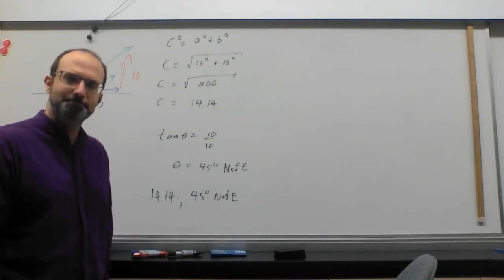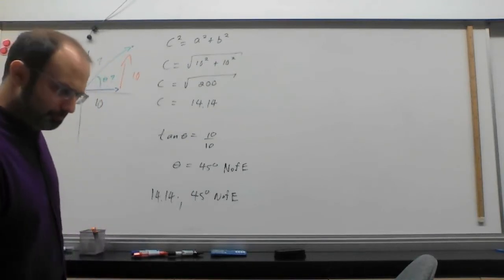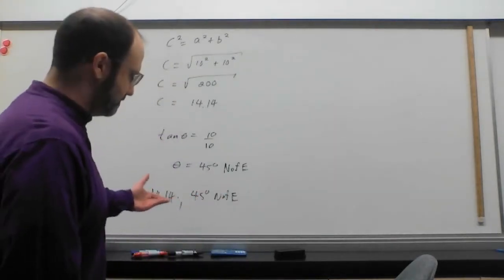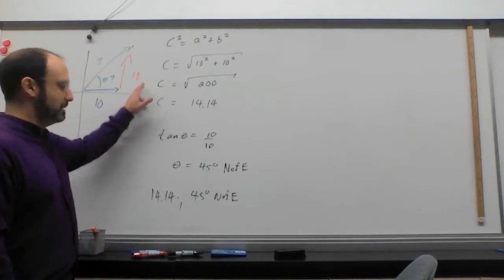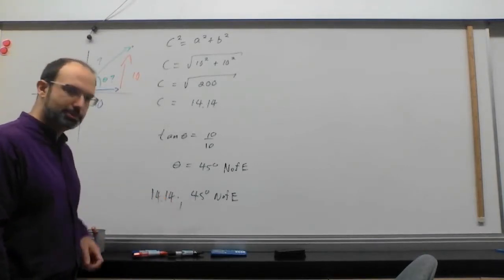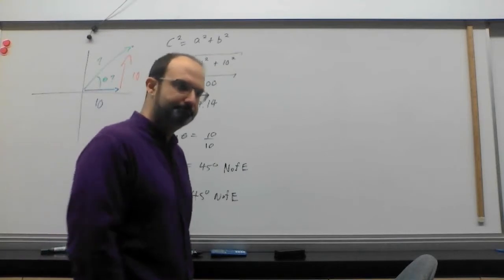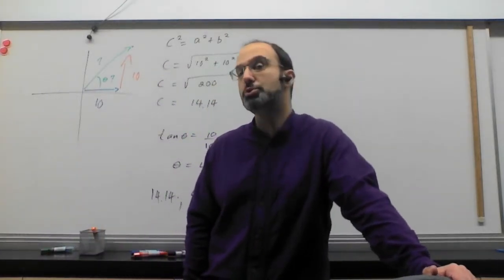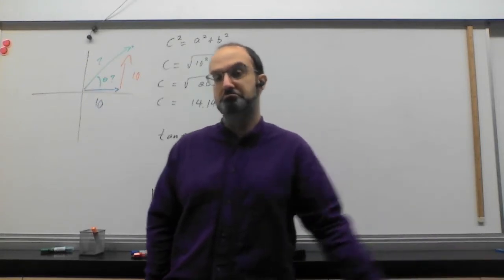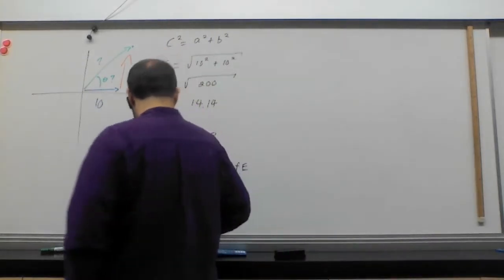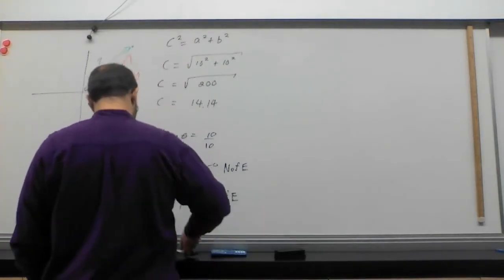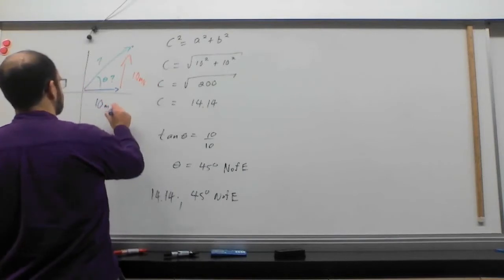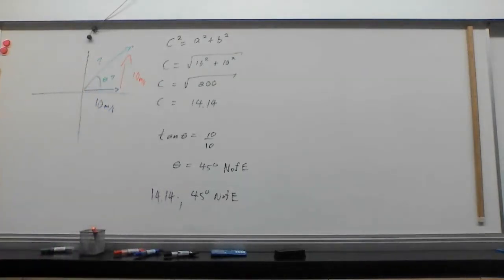Because it doesn't actually matter. When I'm doing vector addition, the method is the same. When we did this the first time, these units were meters. 10 meters and 10 meters. And this was 14.14 meters. But it doesn't have to be. Any vector is added this way if it's two-dimensional. So I can choose what the vector is. And I'm going to choose something a little different. I'm going to choose meters per second.